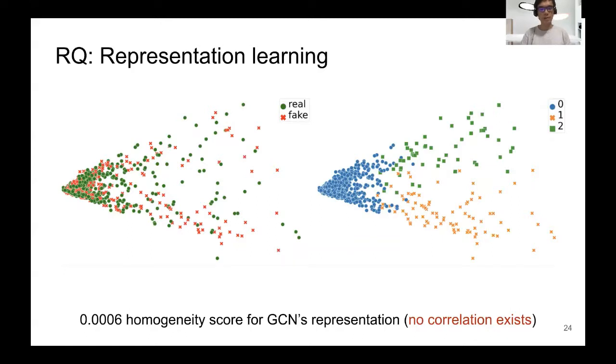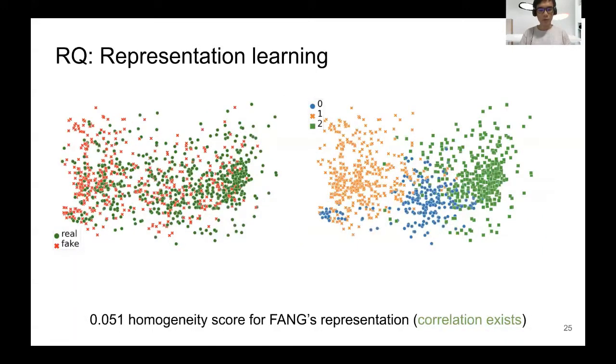We also examine the representations produced by our models. You can see that the homogeneity scores indicating the correlation between the representation clustering and the actual factuality labels is quite low for GCN, indicating that there are no correlations. Whereas for FANG, this homogeneity score is 0.051, indicating that the correlations exist.